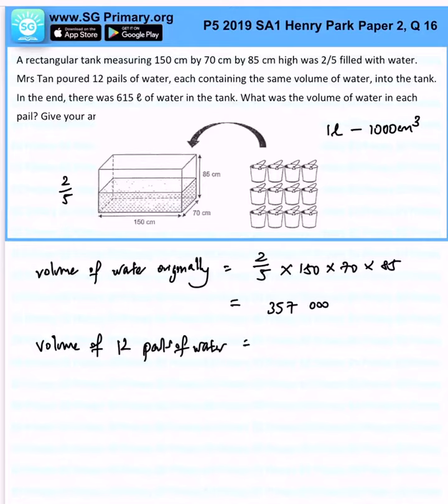That would be 615,000 minus 357,000, which will give us 258,000. That would be the difference that is accounted by the pails.